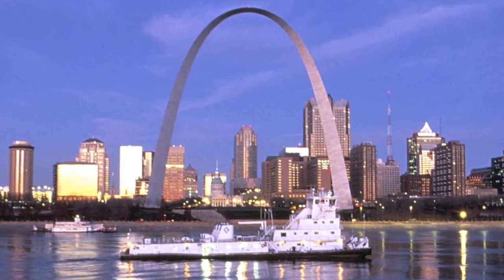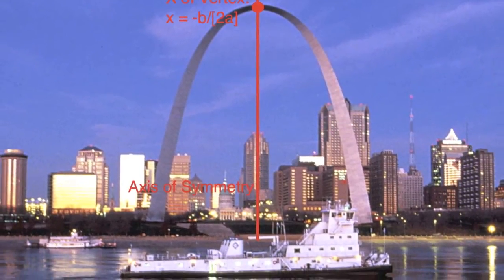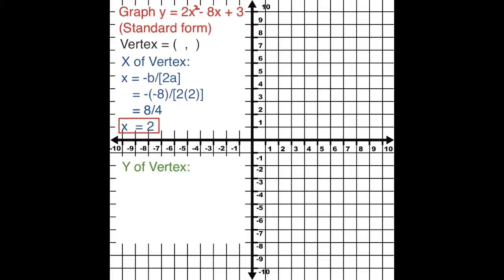Alright stop, let's plot the vertex. Negative b over 2a gives x. Y comes from plugging in x, evaluating.